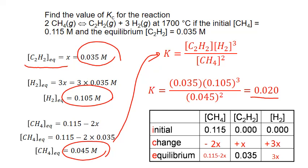We pointed out in a previous PowerPoint that we leave off concentration units in our equilibrium expressions, which means equilibrium constants are unitless. They're also specific to the temperature of the reaction. This value of 0.020 applies to this reaction at 1700 degrees Celsius only. If we change the temperature of the reaction, we would also change the value of the equilibrium constant.